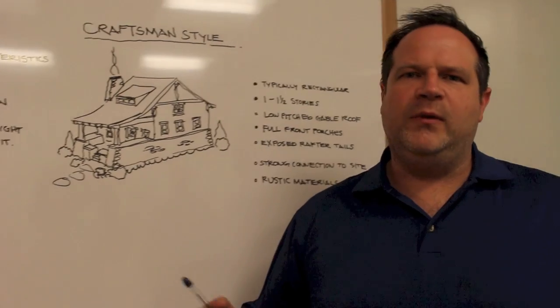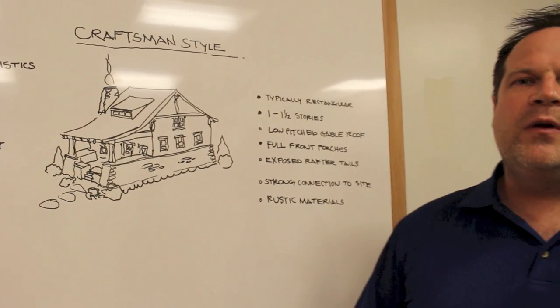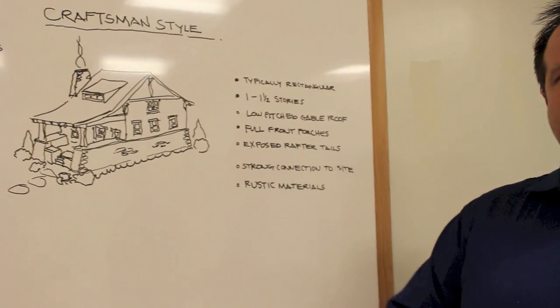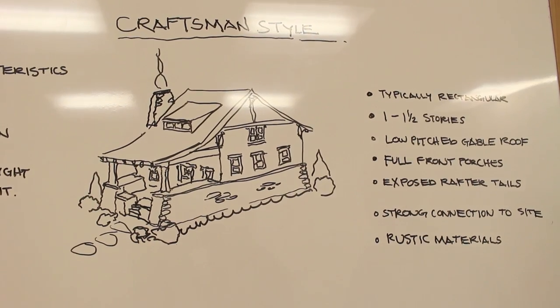So Craftsmans are very simple in their form. They're typically rectangular in plan, usually a story, a story and a half. They usually have very low-pitched gabled roofs. The gable is that little triangle at the end there.